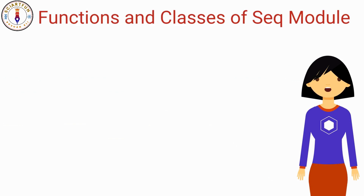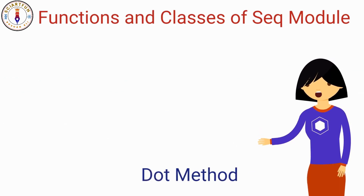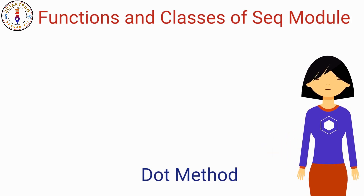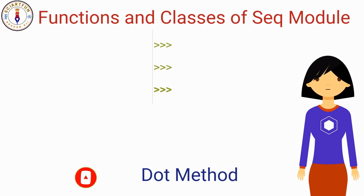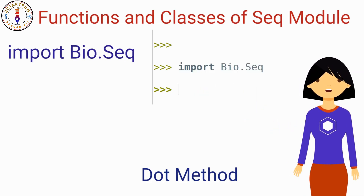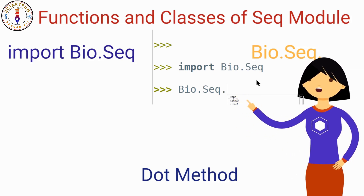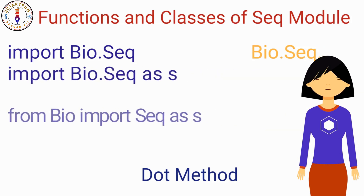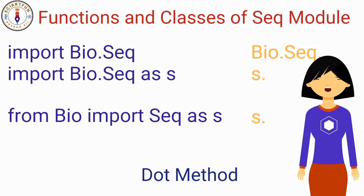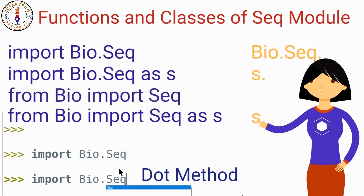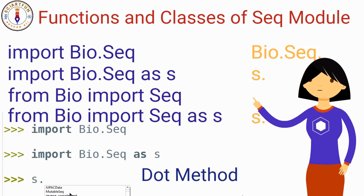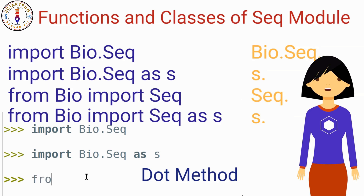Now let's come to our second objective — functions and classes available in the seq module. You can discover these by using the dot method. Just put a dot after typing the name of whatever you have imported, and you will see all the classes, functions, and modules attached to the seq module. If you used method A, type bio.seq followed by a dot. If you used method B or D, just type S followed by a dot. If you used method C, type seq followed by a dot. All functions and classes will appear in a menu.